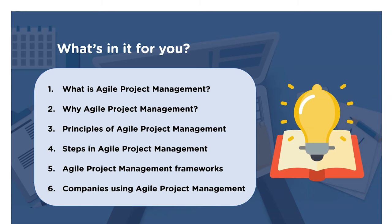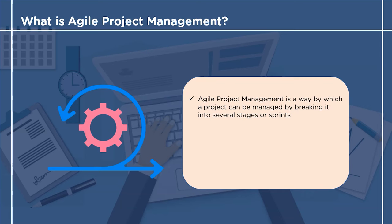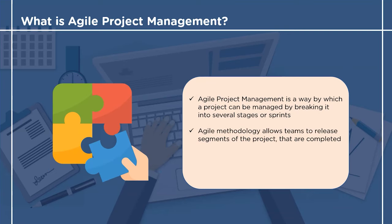So without any further ado, let's get started with what is agile project management. Agile project management, as the name suggests, is a flexible approach to building a project. In agile project management the project is broken down into several stages or sprints. Agile does not work on the principle of delivering the final product at the end of the project.